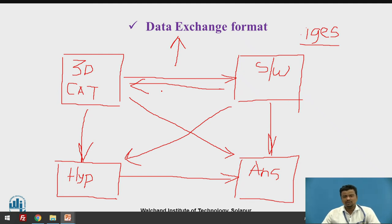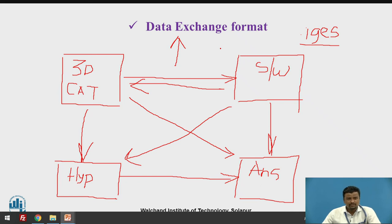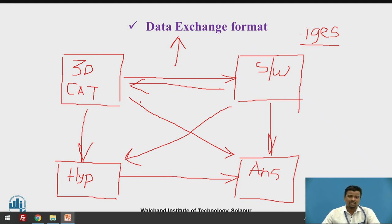The advantage of data exchange format is compatibility. This compatibility is only possible with the help of the data exchange format file extension. For example, if you have created a 3D model in CATIA software, you save that file using the .igs extension. That .igs file can be opened in SolidWorks, HyperMesh, or ANSYS without losing any data. Every dimension and every surface — including inner surfaces — will be intact, so you can proceed with the further or post-processing steps, such as meshing, structural analysis, or static analysis.